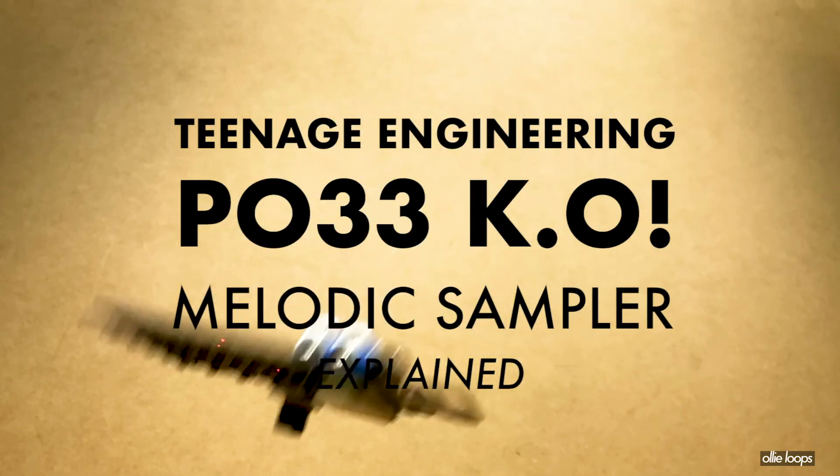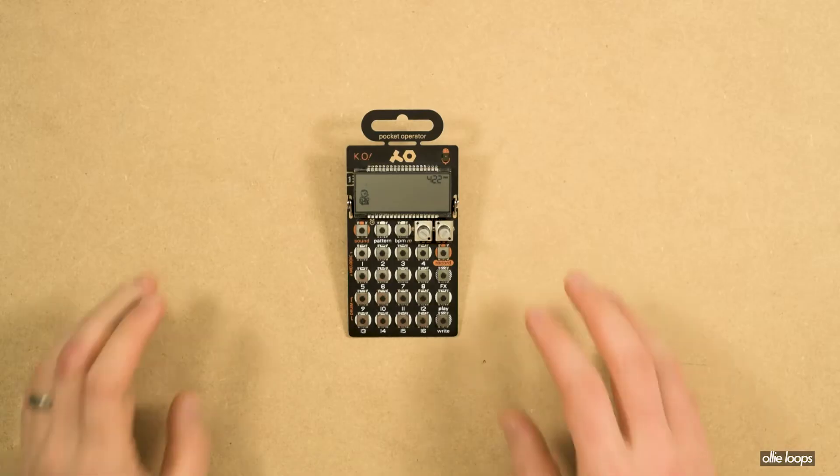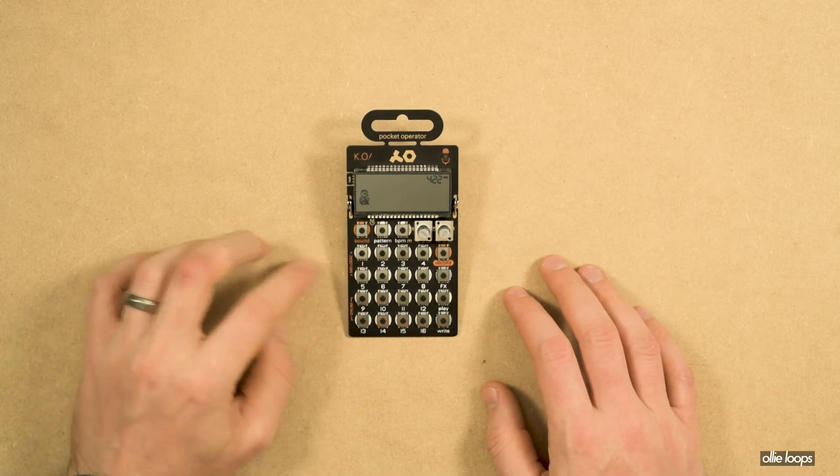This is the Teenage Engineering PO-33 KO. In this video we're going to talk about the melodic sampler.